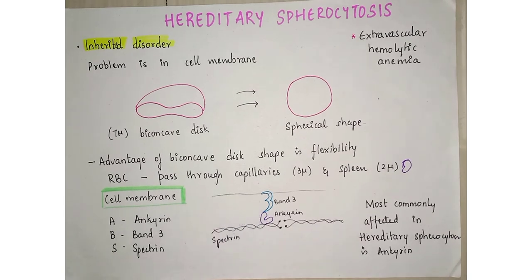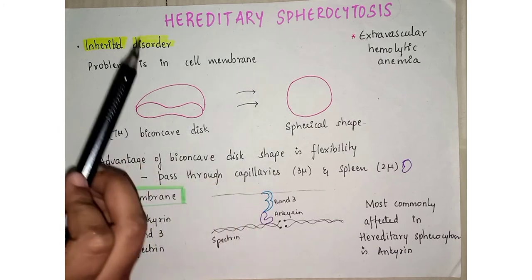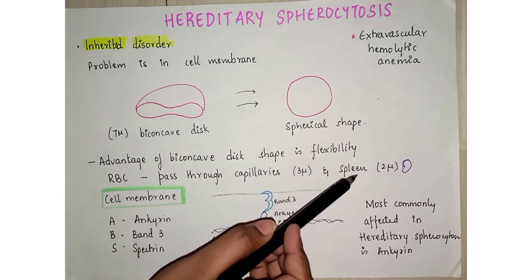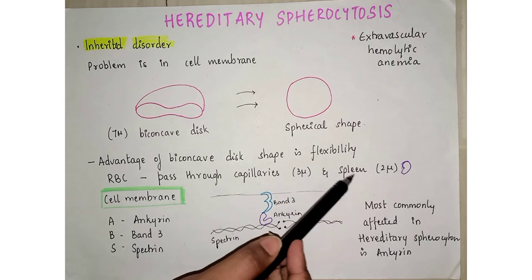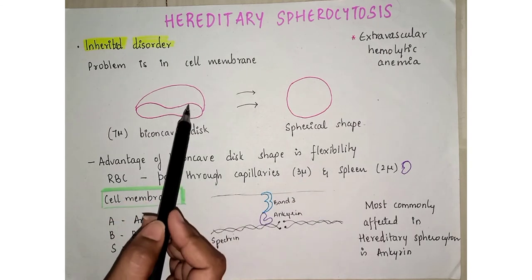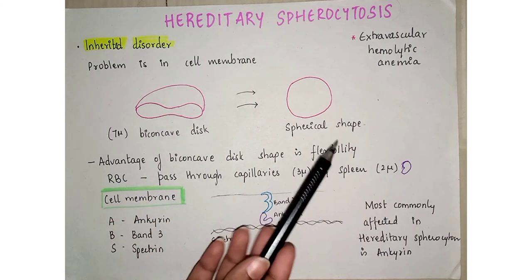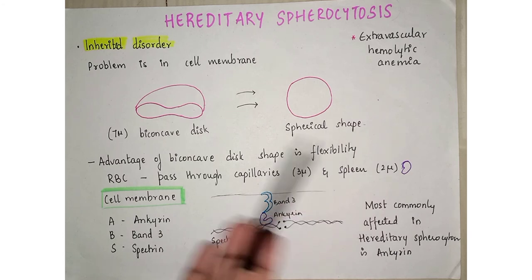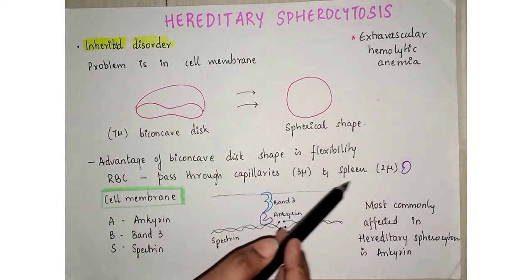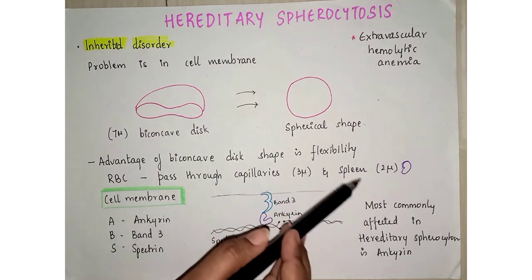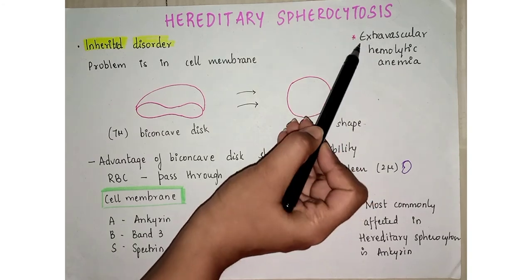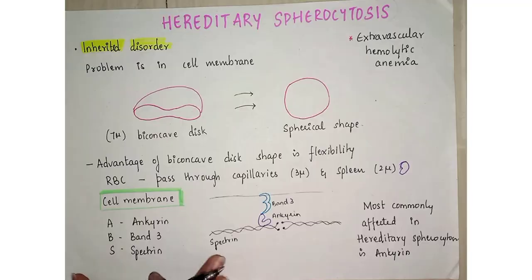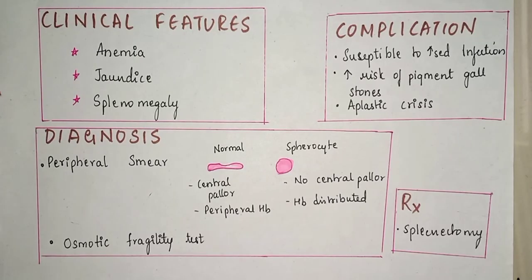Because the RBCs are spherical in shape, whenever they pass through these small vessels, they lead to rupture — that is, hemolysis. As this hemolysis occurs outside the vessels and into the organ — the spleen — it is called extravascular hemolytic anemia.